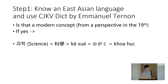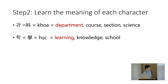The next important step is to know what each character means. That dictionary tells you that 'ke' means Department/Course/Section/Science — just pick up one meaning, like 'department.' And 'hak' means 'to learn.' So 'Learning Department' or 'Department of Learning' — different disciplines of learning or knowledge — that's what 'science' means in Chinese. Now you know what that means.